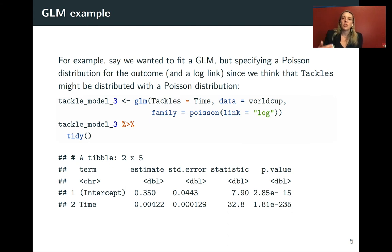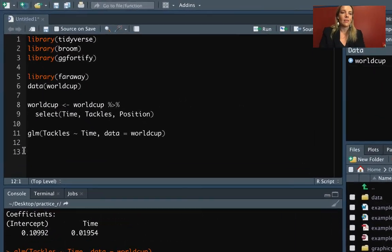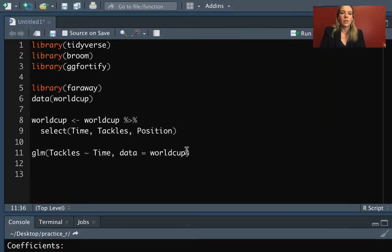So let's say that we wanted to fit a GLM, but with a Poisson distribution for the outcome and a log link, because those tackles are counts where we have this case where it looks like it maybe is closer to a Poisson distribution for the outcome that we're looking at. We can take the same model that we have using GLM, but then we can add family, and then we can do Poisson, and then we can specify that the link that we want equals log.